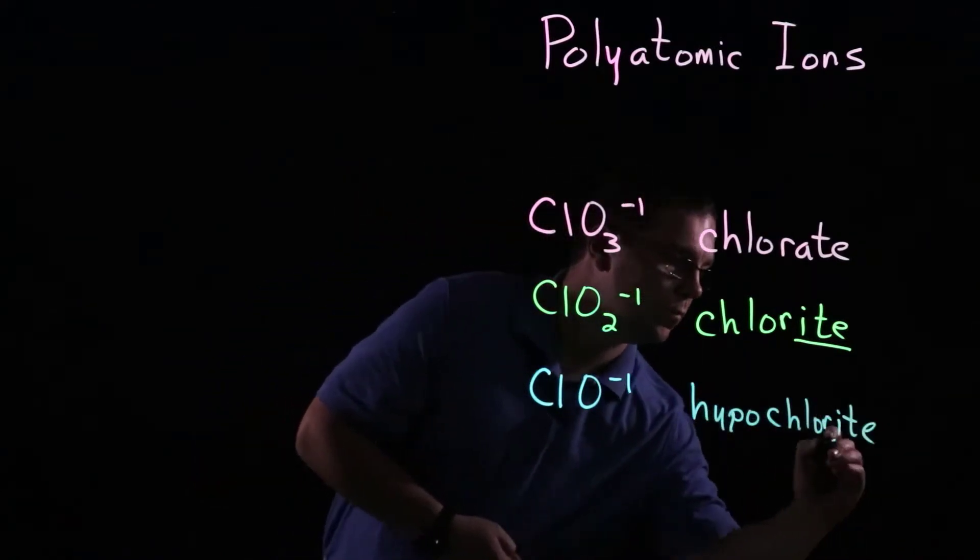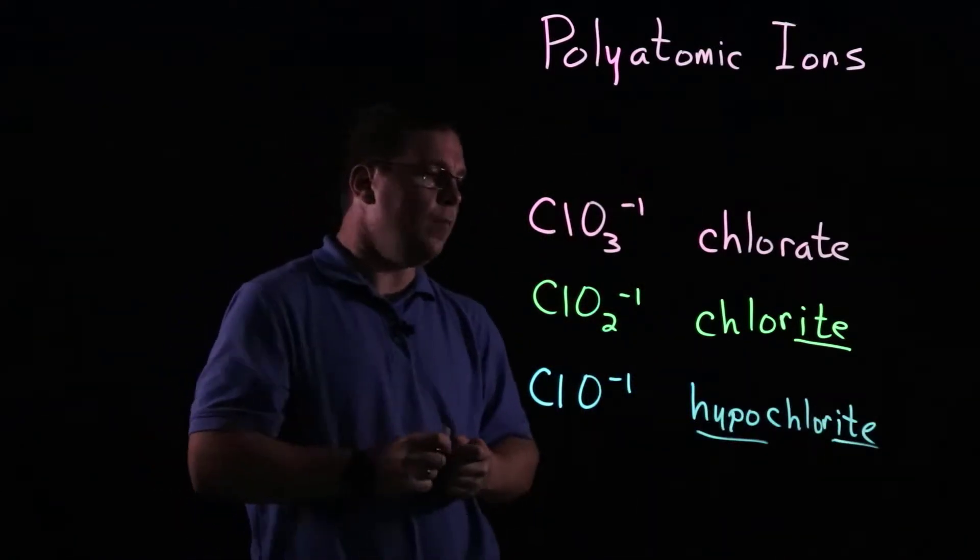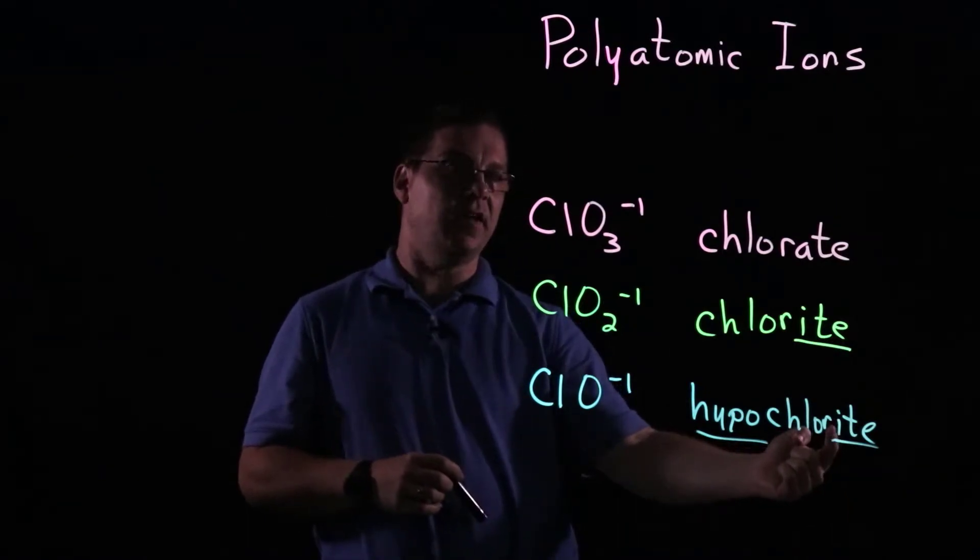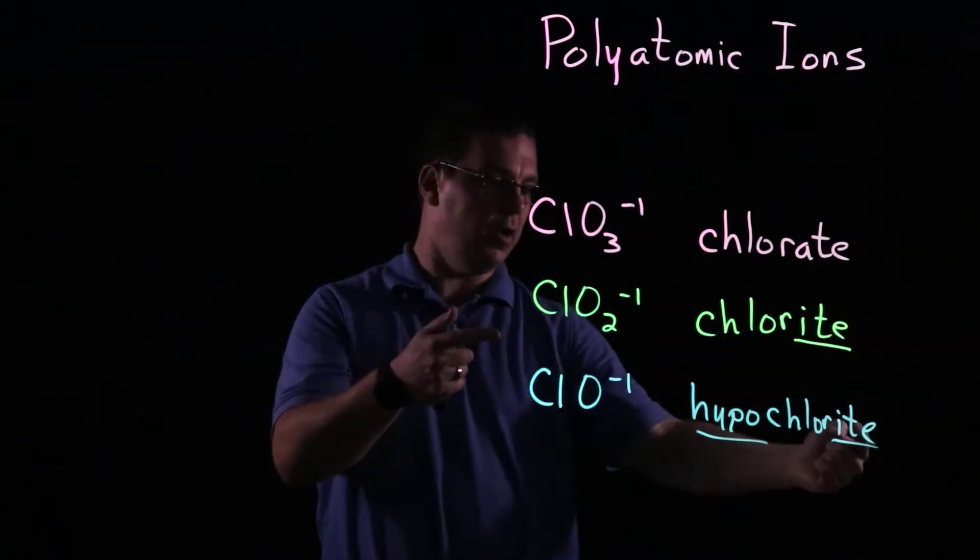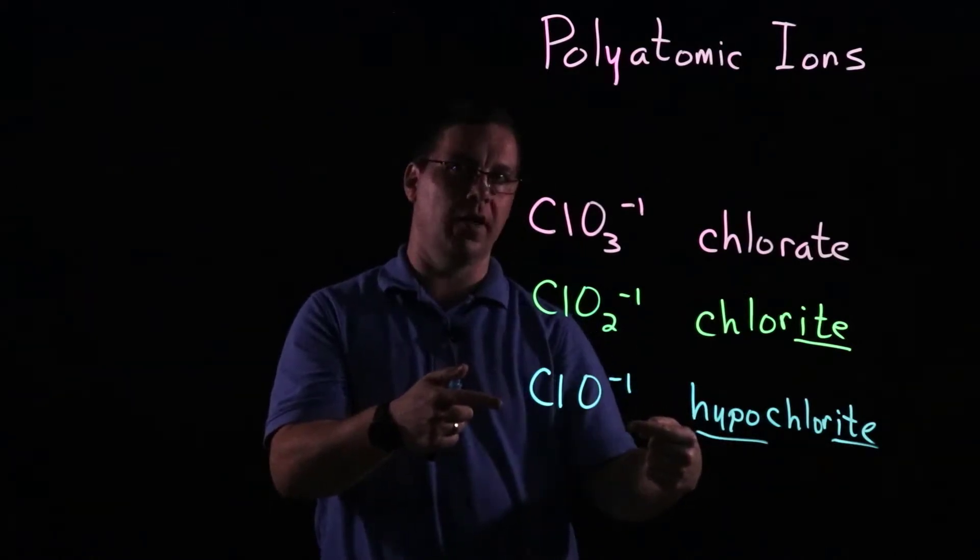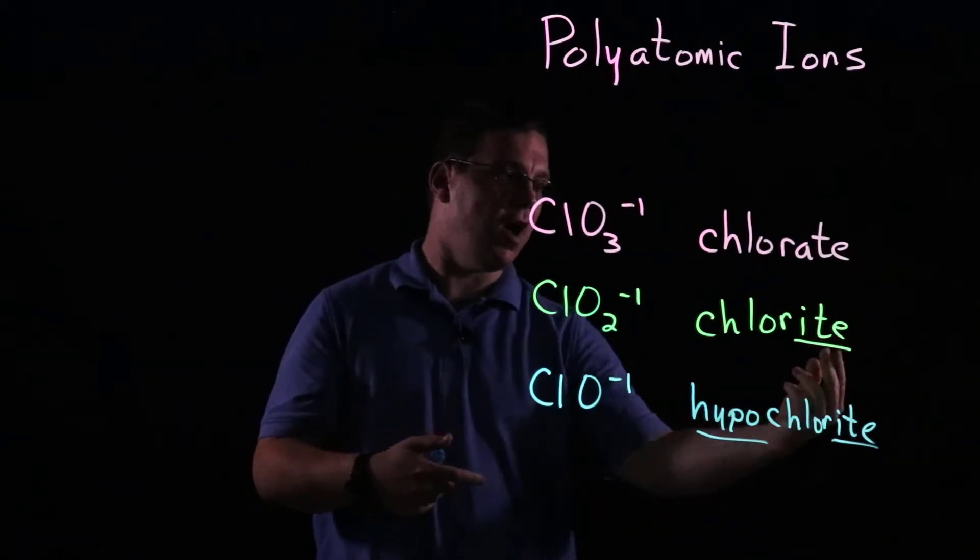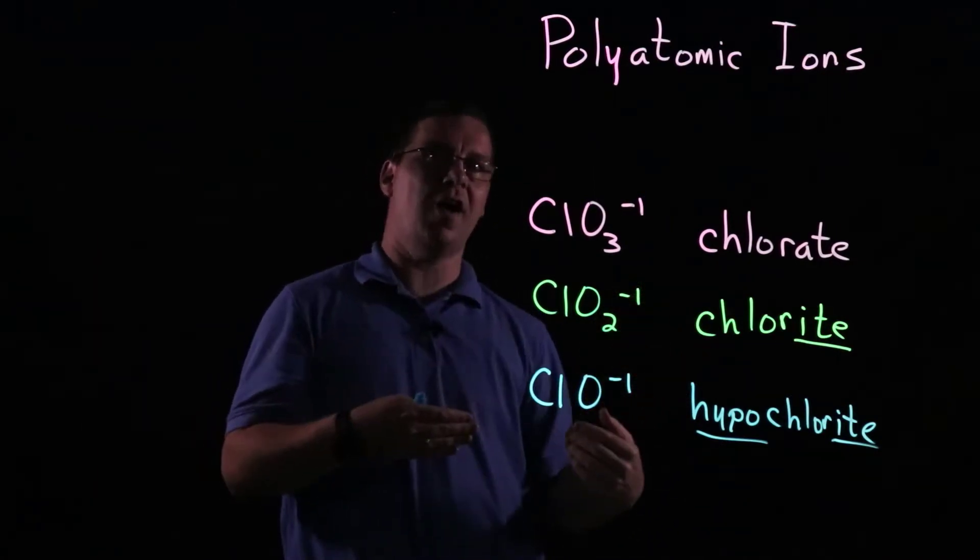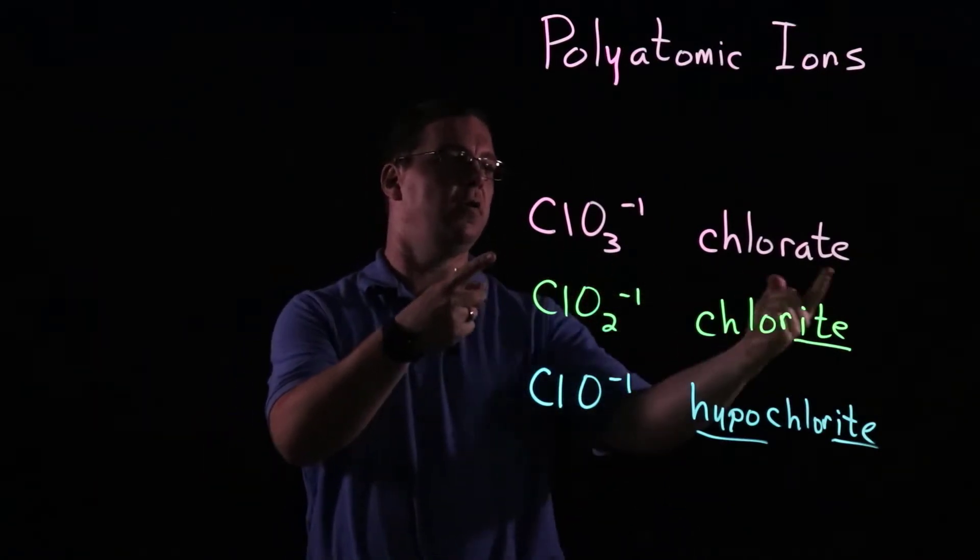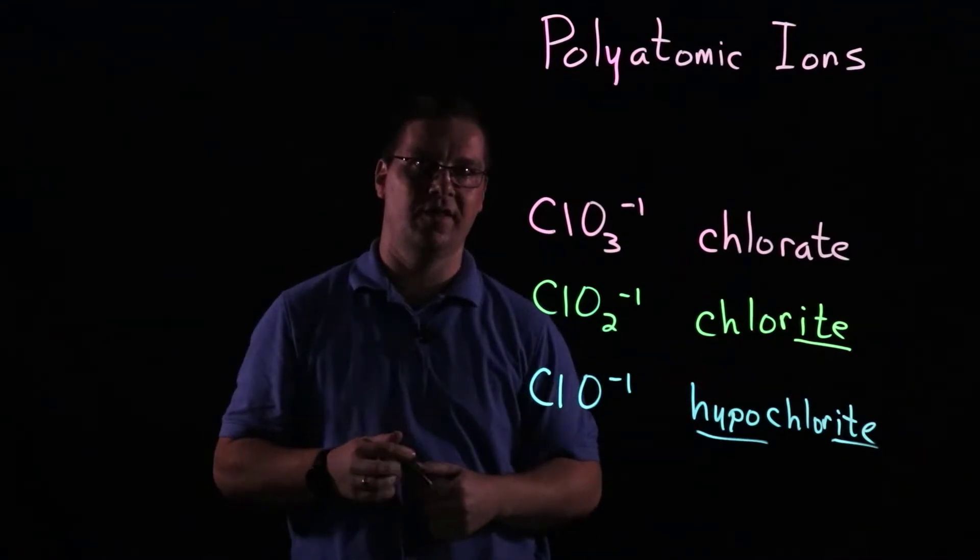And so in that name, again, we see the I-T-E ending. First time we saw it is when we reduced the number of oxygens. Well, we've reduced it even more and taken another one away, so that's a common feature. Whenever you see I-T-E, you know you have fewer oxygens than you did in that common kind of baseline form of a polyatomic ion.